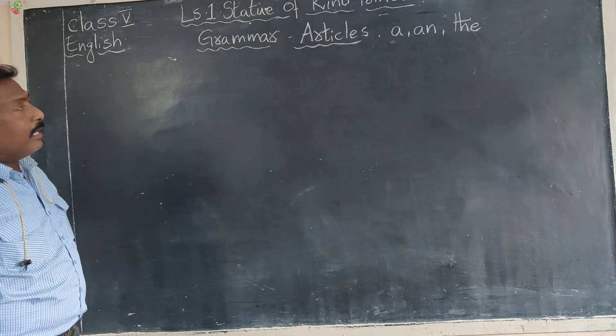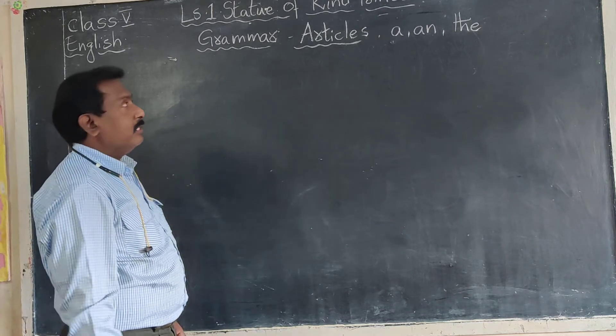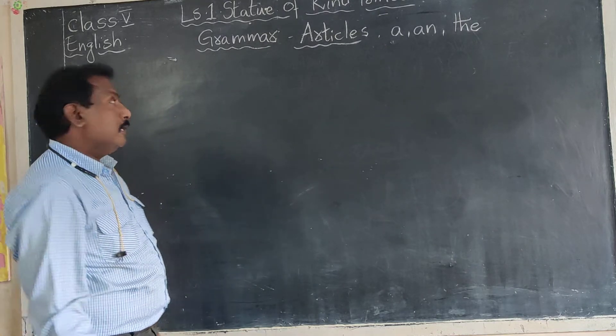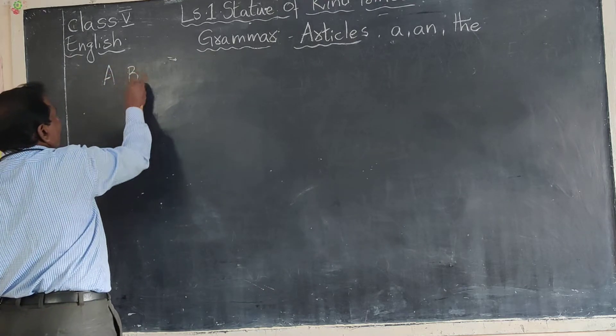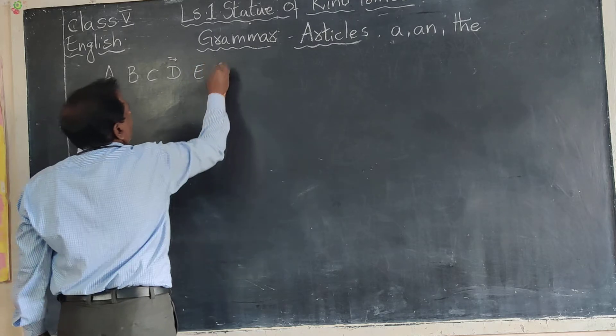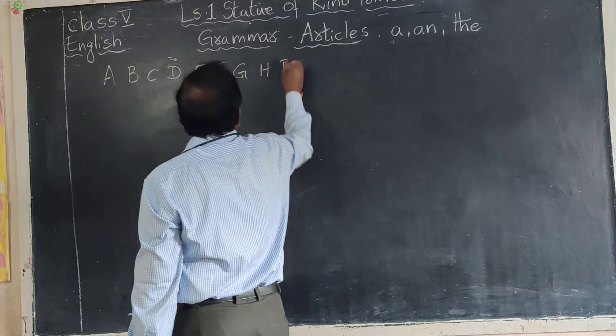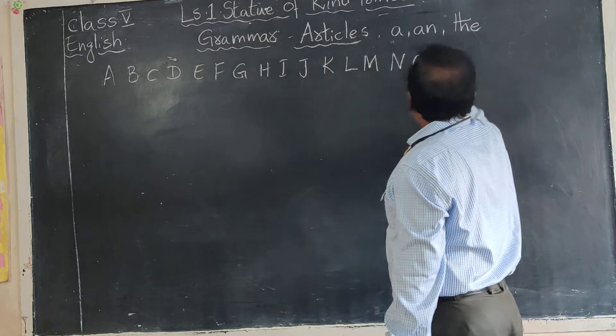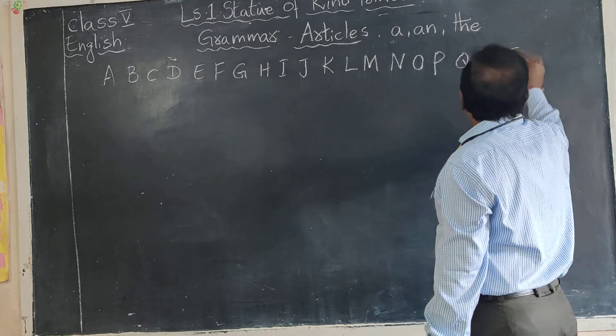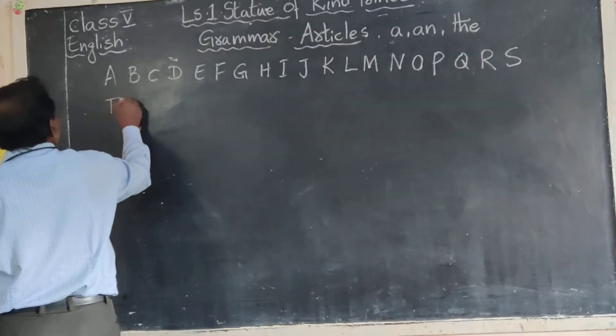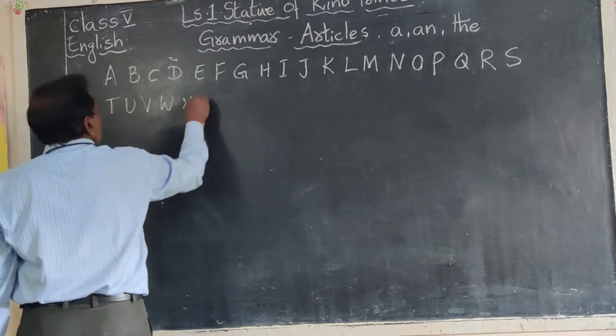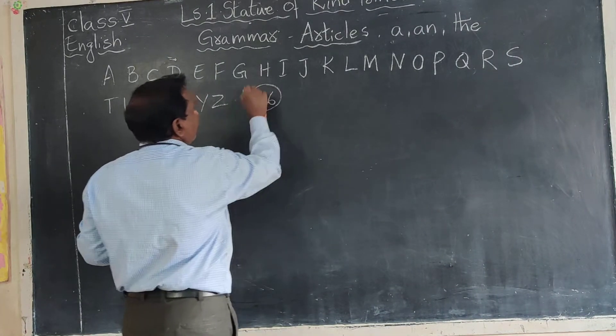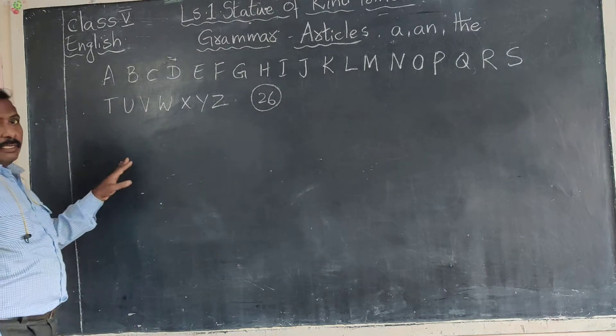Before going to know that, let us see what are vowels and consonants. Children, in alphabet, how many letters are there? Let us see. Once again, just have a repeat. If you count, they are twenty-six in number.